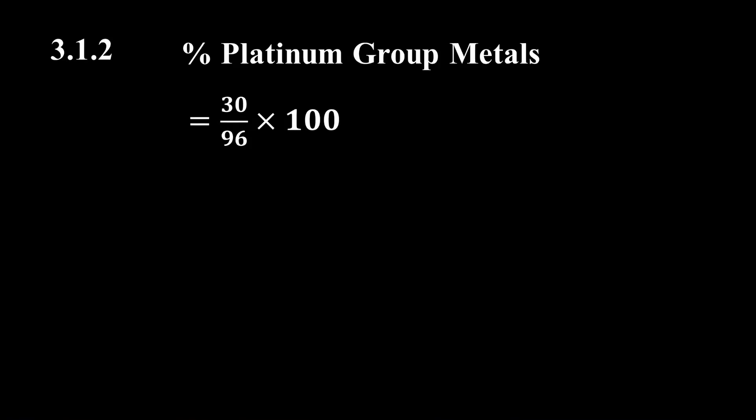So the percentage of operational mines within the platinum group metals is 30 divided by 96, multiplied by 100, which equals 31.25 percent. Rounding this to one decimal place gives 31.3 percent.